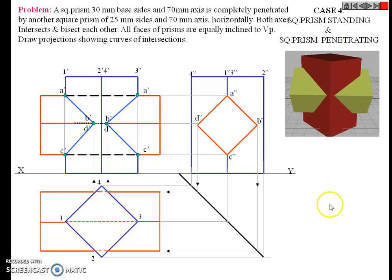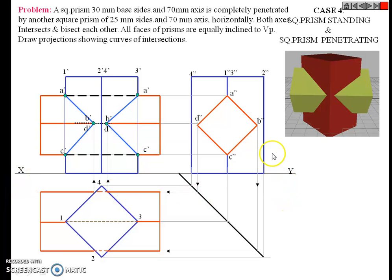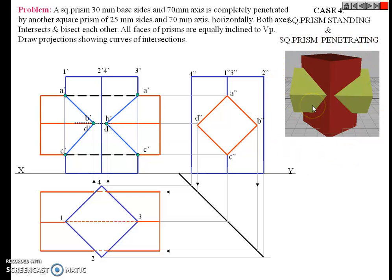If the observer is from this side, we get this type of front view. When the observer is from this side, we get this type of side view. When the observer is from the top side, we get this top view. Above the XY line is the vertical plane, below the XY line is the horizontal plane. This is the 45-degree line. Our objective is to draw the front view, top view, and side view of this composite intersection of solid objects.